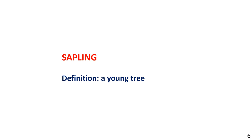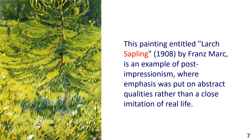Sapling: a young tree. The picture shows a piece of art. Sentence example: This painting, entitled 'L'Arche Sapling 1908' by Franz Marc, is an example of post-impressionism, where emphasis was put on abstract qualities rather than a close imitation of real life.